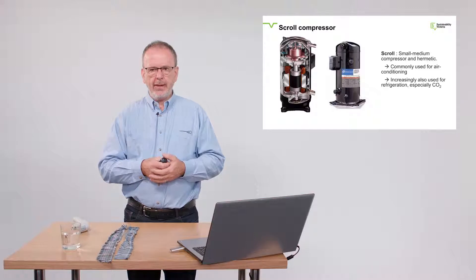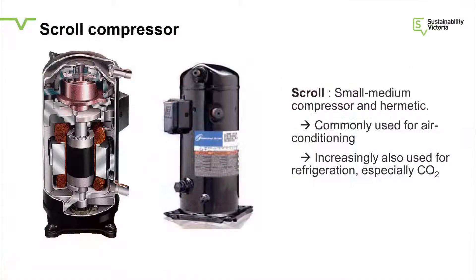We also have scroll compressors, which are vertical units as shown in the picture. The characteristic you'll always recognize right away is the little knob on the top — if you see that little knob on the top of the right-hand picture, that tells you it's a scroll compressor as opposed to a reciprocating machine. Scroll compressors don't have pistons; they have two snail-like casings that intermesh in an interesting compression process. Most commonly used for air conditioning, they are increasingly used for refrigeration and also increasingly for carbon dioxide refrigeration on the low-temperature side.